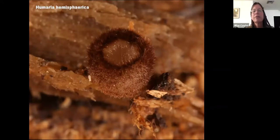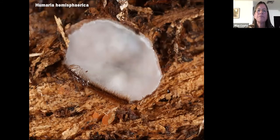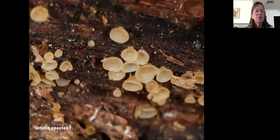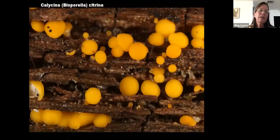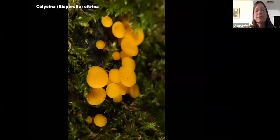Here's another cup fungus. Humaria hemisphaerica is a cool one — only a few millimeters across on rotten wood, looking almost like a little hollow sphere when young, but when mature it looks like this, with spores catapulted from the whole white surface when ripe. This is possibly Orbilia, another little cup fungus. Calycina — or Bisporella citrina, as many still call it — are only about four or five millimeters in diameter but very abundant and very bright, so they're easy to find.